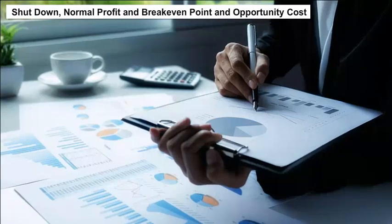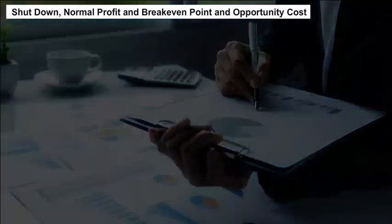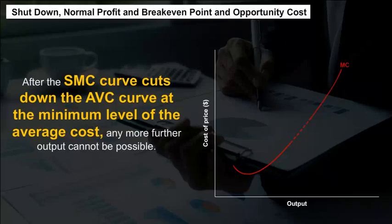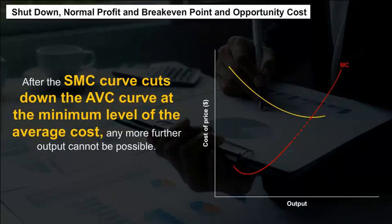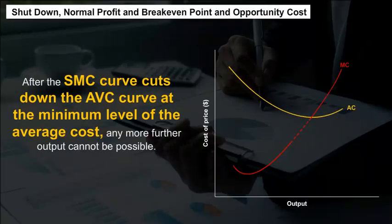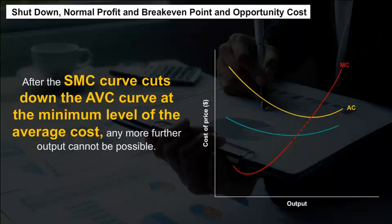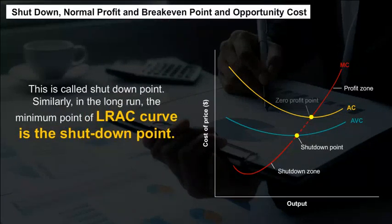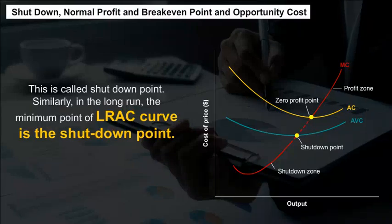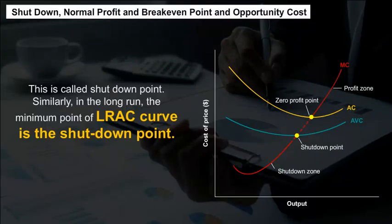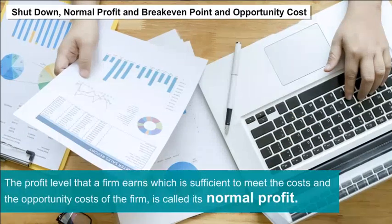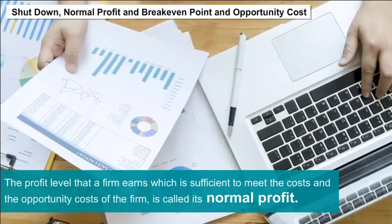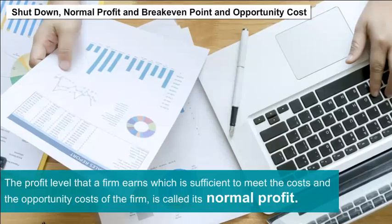Shutdown Point, Normal Profit, and Break-Even Point. After the SMC curve cuts the AVC curve at the minimum level of average cost, any further output cannot be possible — this is called the shutdown point. Similarly, in the long run, the minimum point of the LRAC curve is a shutdown point. The profit level that is sufficient to meet the costs and opportunity costs of the firm is called its normal profit.